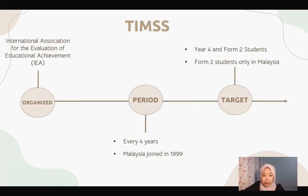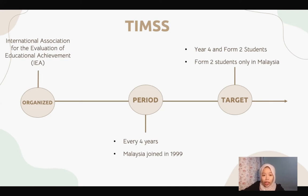Next is TIMSS. TIMSS is not organized by OECD like PISA. It is organized by the International Association for the Evaluation of Educational Achievement, or IEA. Unlike PISA, TIMSS is done every four years and Malaysia participates in it since 1999. TIMSS targets year 4 and form 2 students; however, in Malaysia, only the form 2 students will be participating in it.